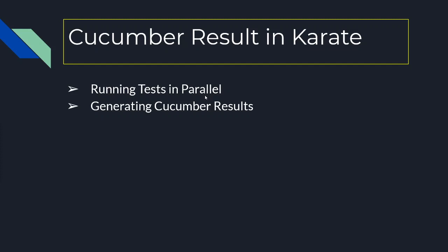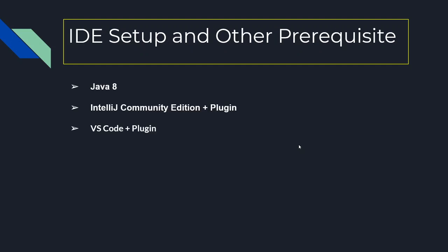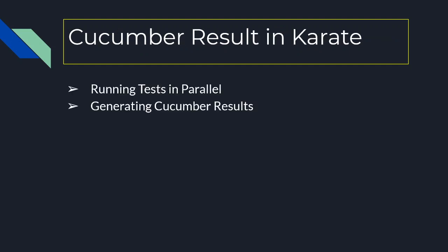Hello everyone, welcome to the second session. In the last session we have seen what Karate is, how to use Karate for API test automation, we did the initial setup and ran a few tests to get the gist of Karate. In this session we're going to focus on how to generate cucumber results in Karate and running tests in parallel.